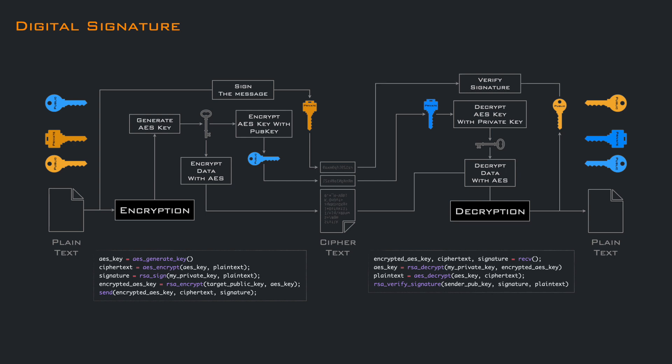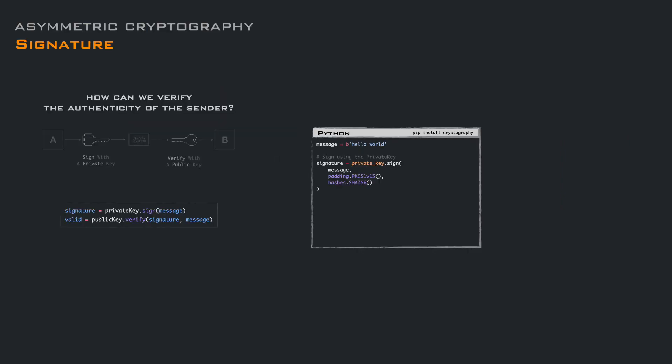By signing the plain text, any modification or tampering of the message content can be detected. In Python, the private key has a sign method, where we specify the message to sign, the padding, and the hash to use, which is basically the signature type. Again, there are multiple padding and hash options that you can use. If you interact with multiple languages, you should check the ones supported by all of them. To verify a signature, there is a verify method on the public key that takes the signature to check, the message to validate, and the algorithm parameters. An exception will be returned if the signature is not valid.